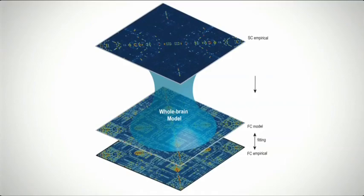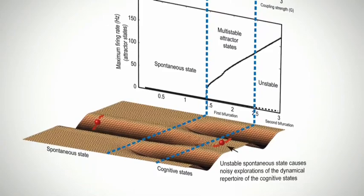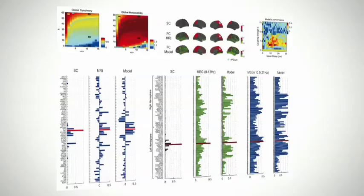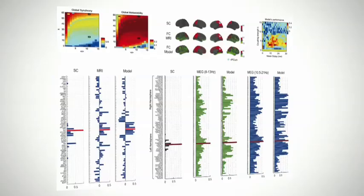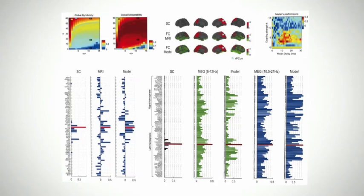The whole brain model is able to best fit the empirical data when the network is critical, so that at that operating point the system defines a meaningful dynamic repertoire. Such models have managed to simulate and predict empirical neuroimaging data from normal participants.